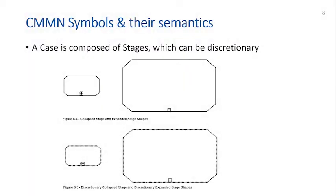A case is composed of stages, and stages can be discretionary. A stage is shown as an octagonal shape. It can be collapsed or expanded — a little plus sign when collapsed, a minus sign when expanded. When it's discretionary, it has a dashed border rather than a full border.